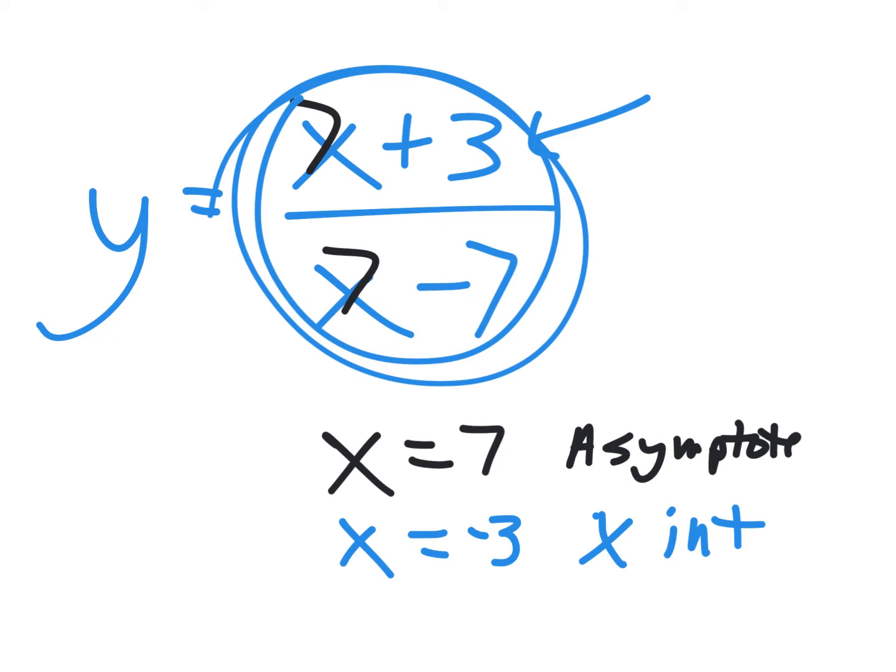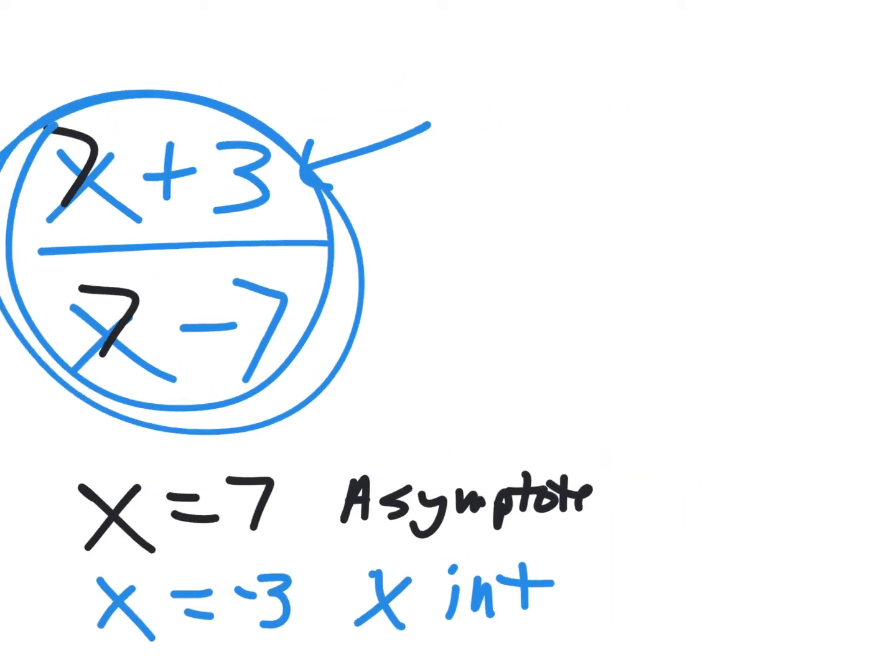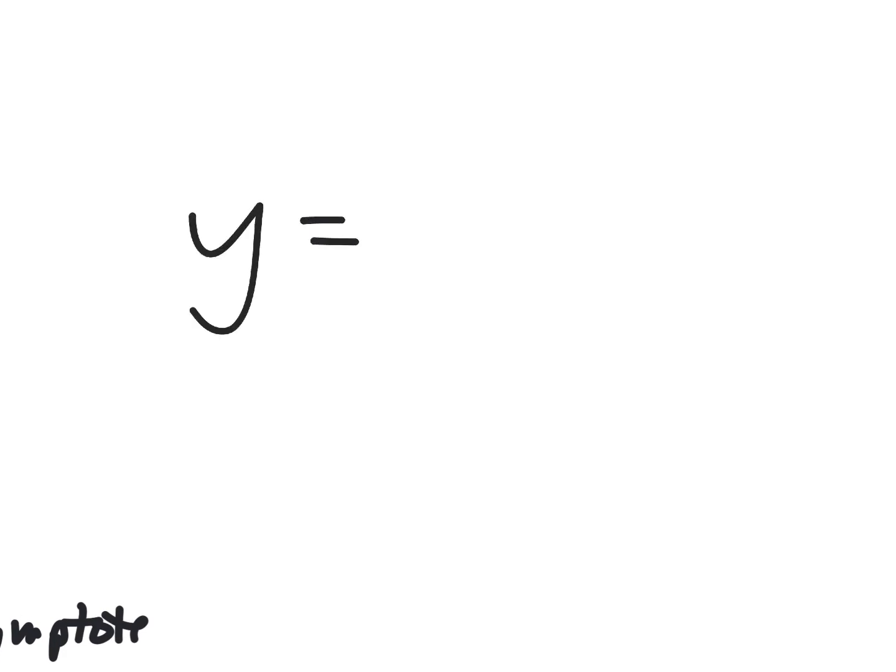What makes the top zero is your x-intercept. What makes the bottom zero is your asymptote, because the function can't exist there. That's what a dotted line means on the graph — we can't put anything there.